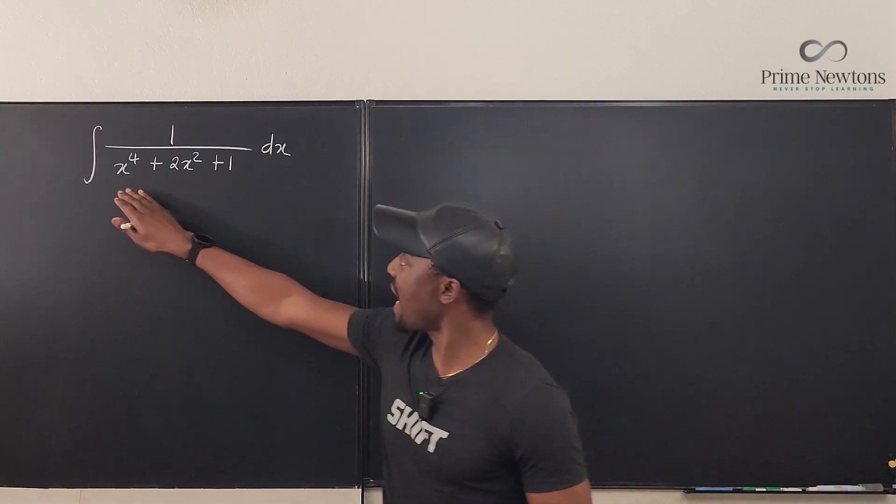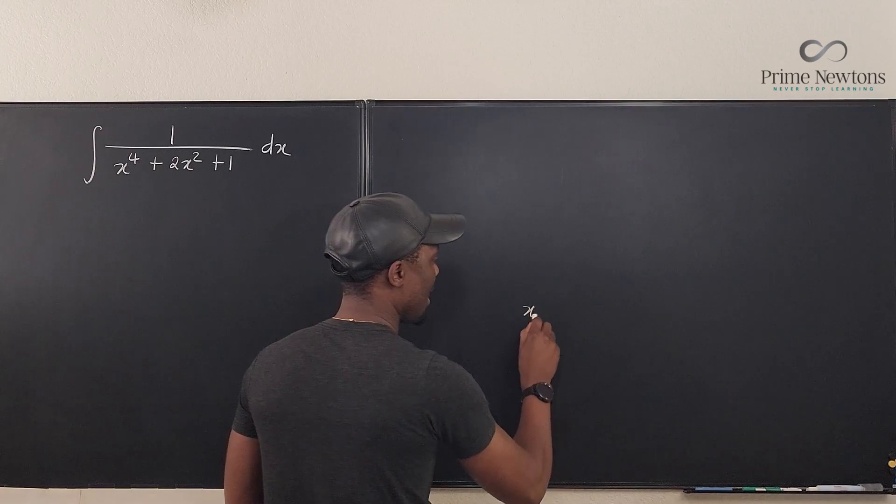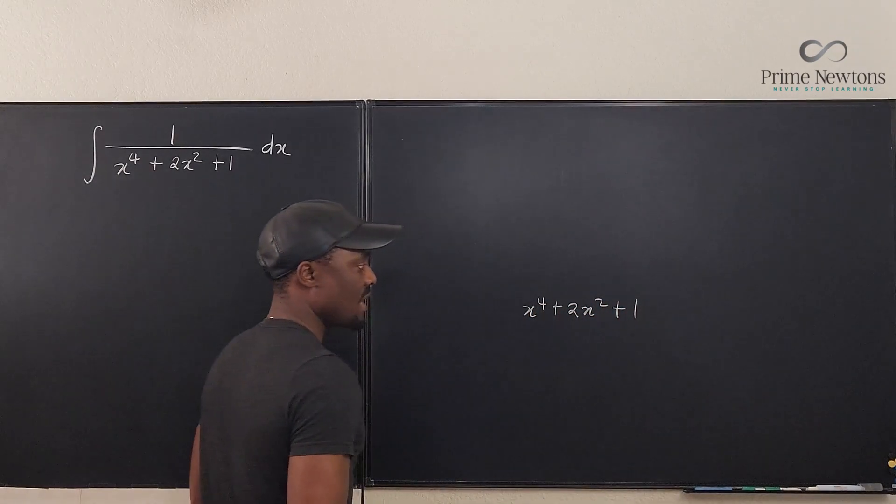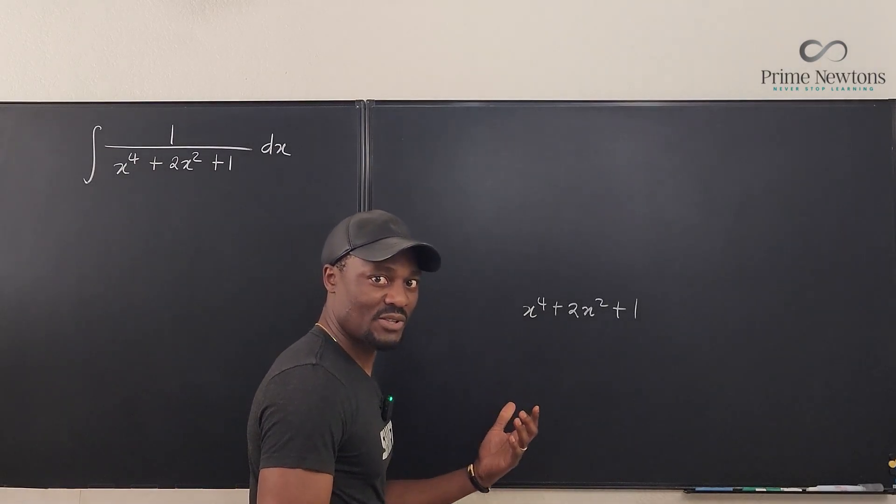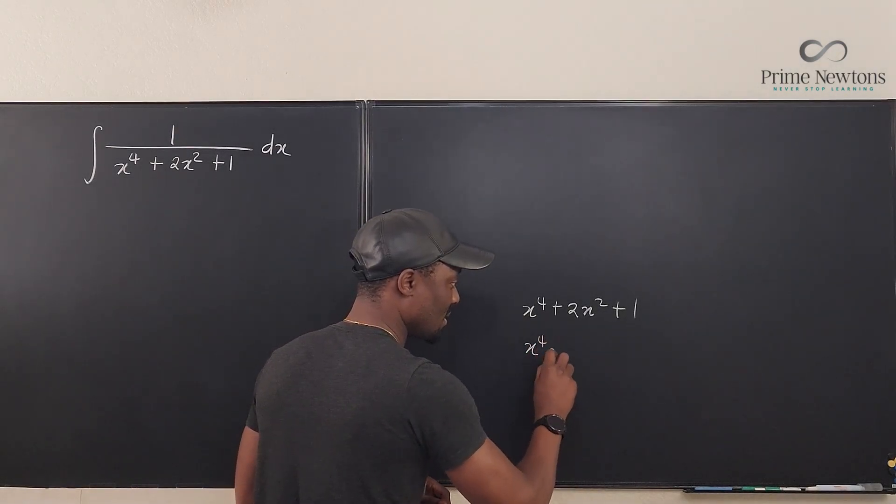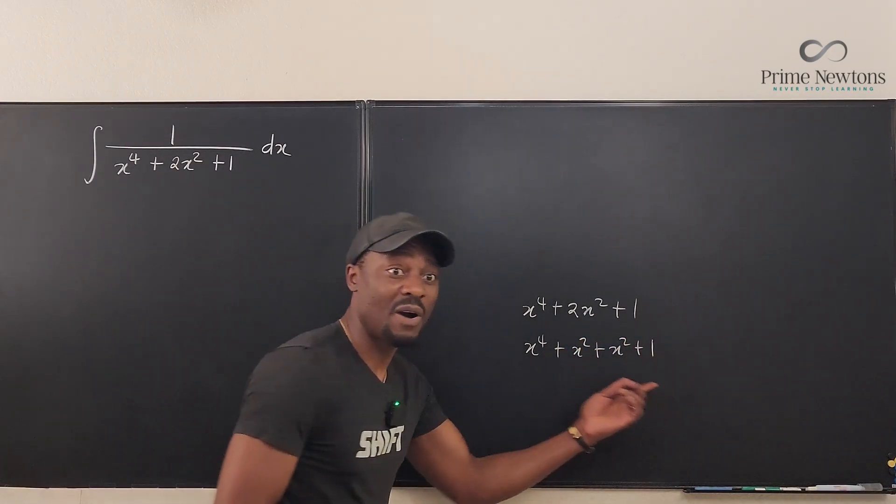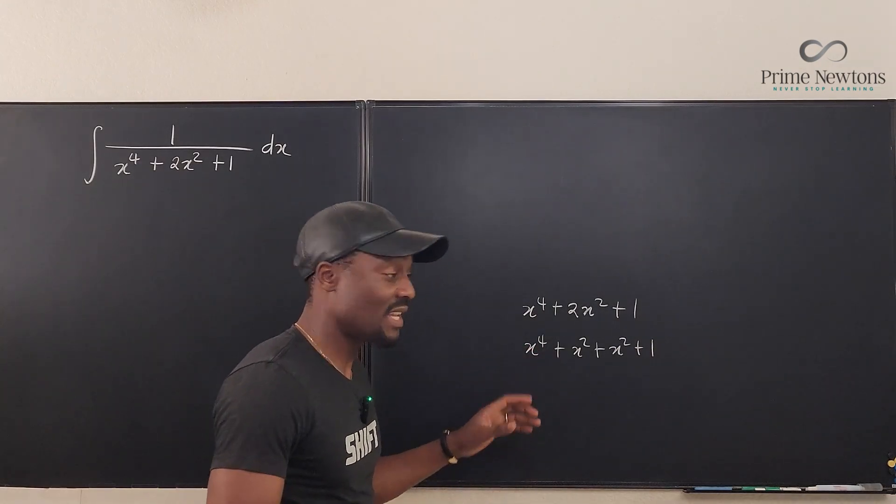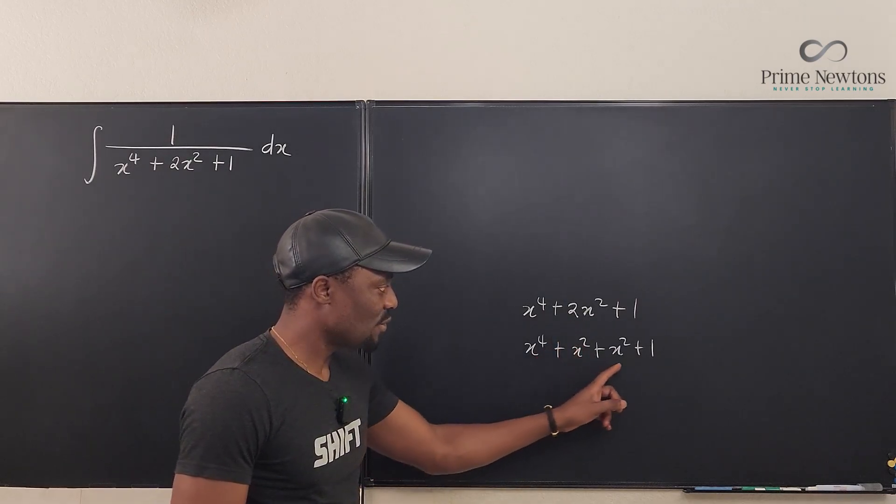So if I take x to the fourth plus 2x squared plus 1, I'm gonna write it here: x^4 + 2x^2 + 1. I know it's factorable. I wrote the question. This is gonna be x^4 + x^2 + x^2 + 1. This is how I factor and this is how I teach factoring, especially of a quadratic or the trinomial that is factorable. See, I have split this into two.